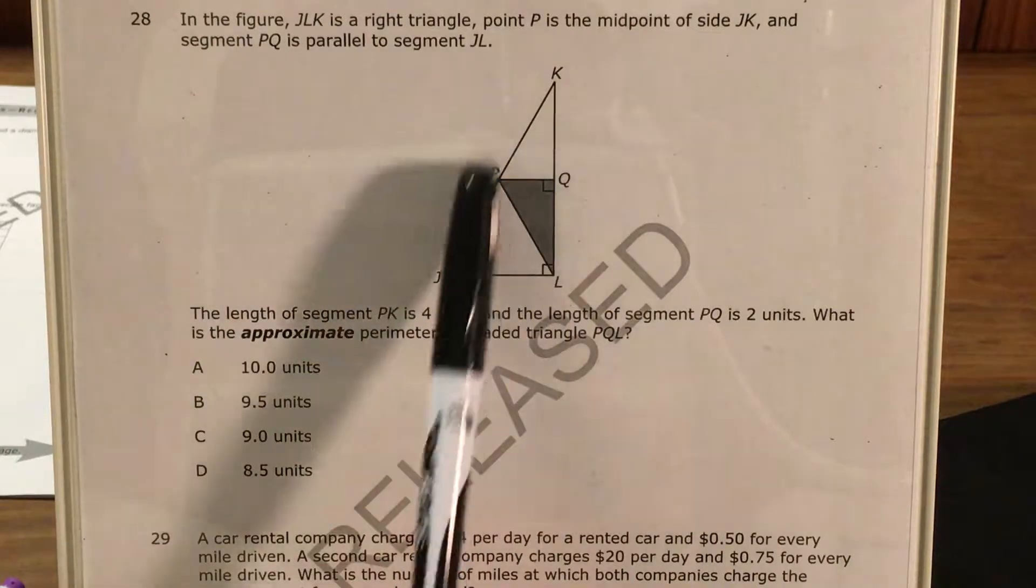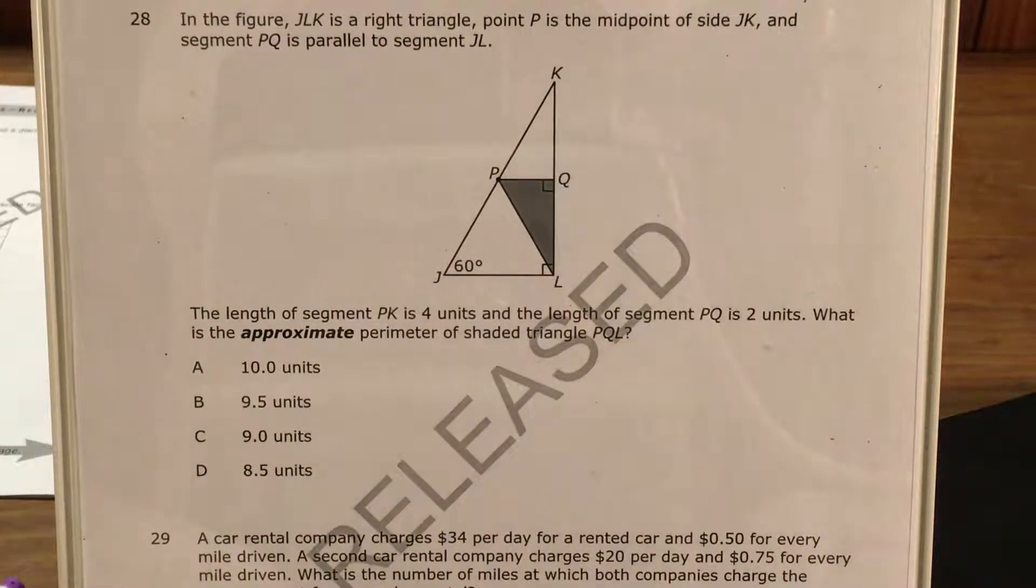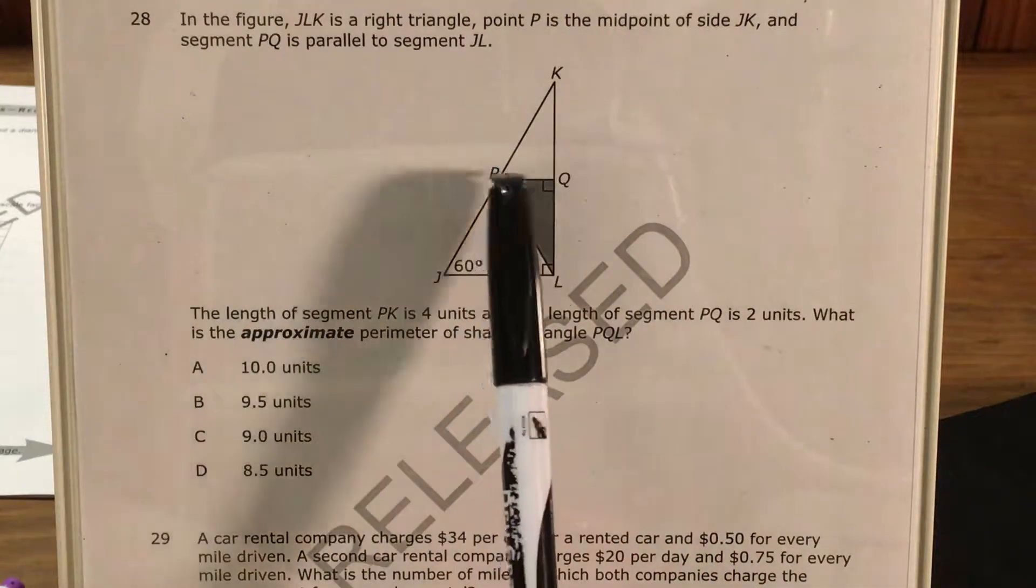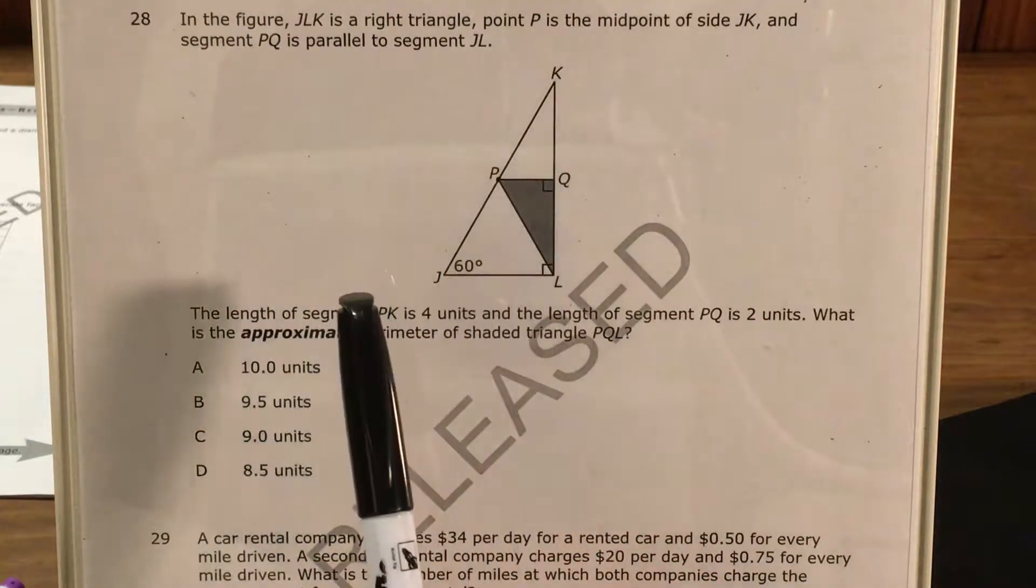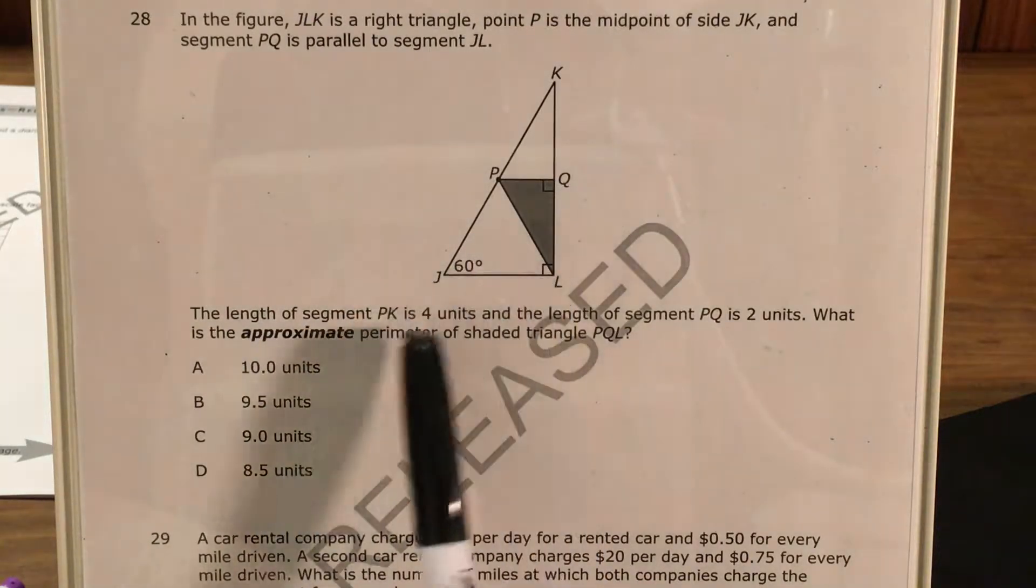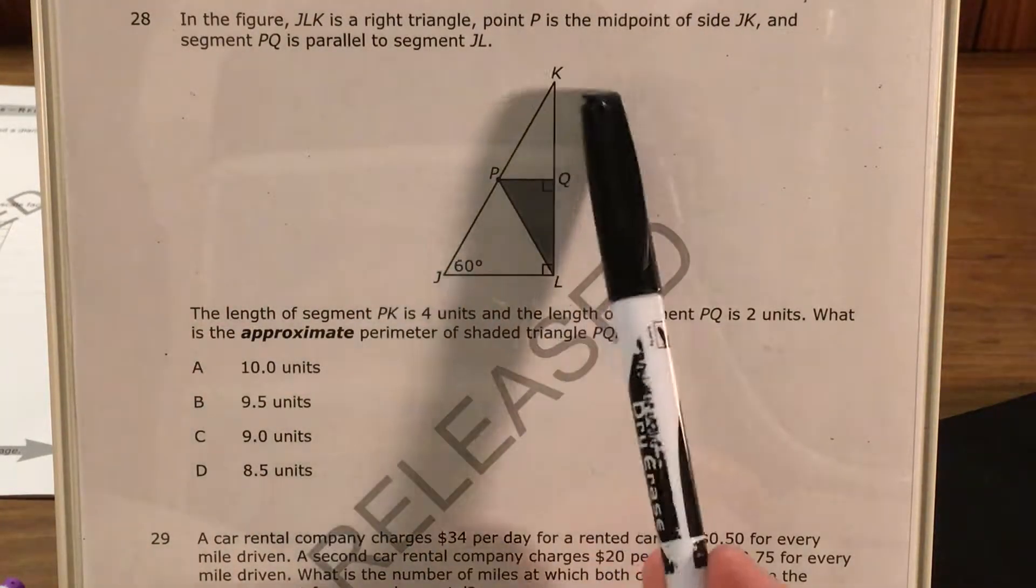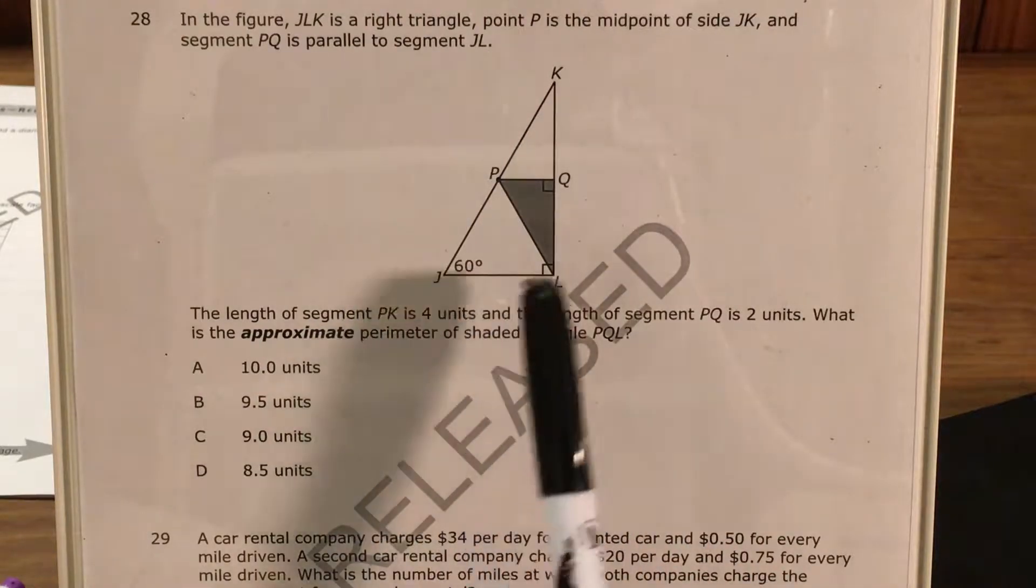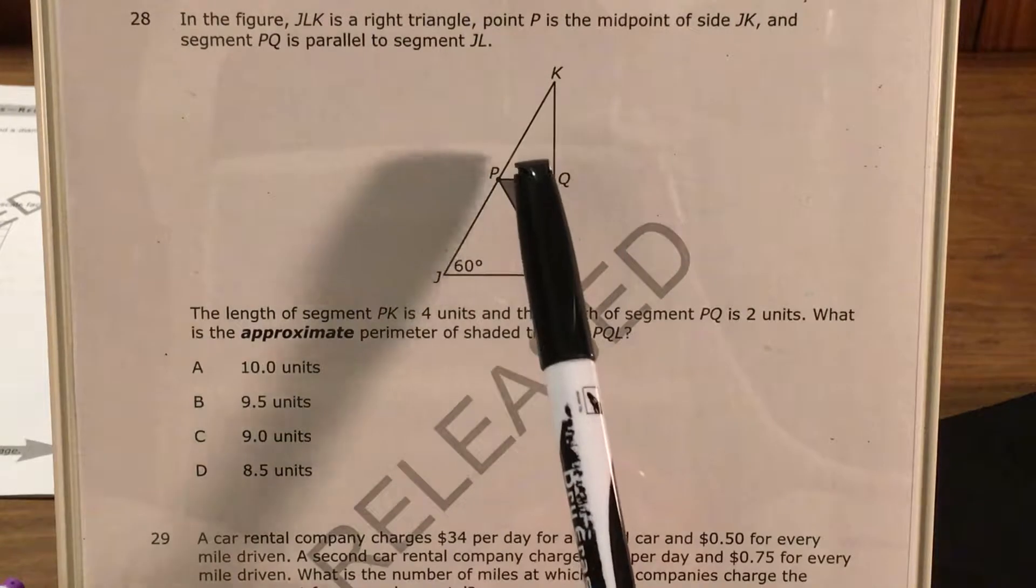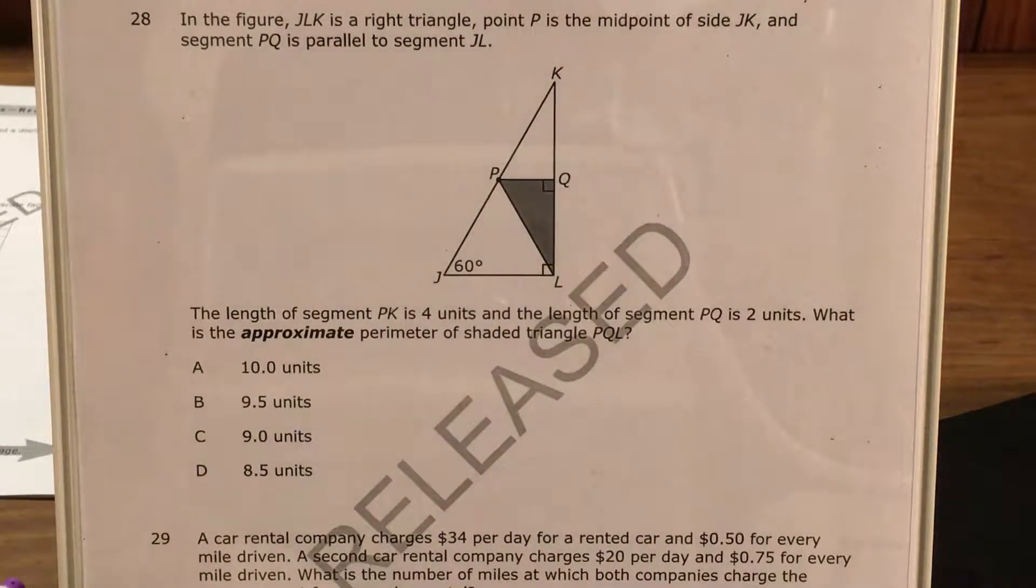This question gives us this wonky crazy thing with a bunch of triangles and says that triangle JLK is a right triangle, point P is the midpoint of side JK, and segment PQ is parallel to segment JL. It also tells us that the length of segment PK is 4 and the length of PQ is 2, and we're supposed to find the perimeter of triangle PQL.